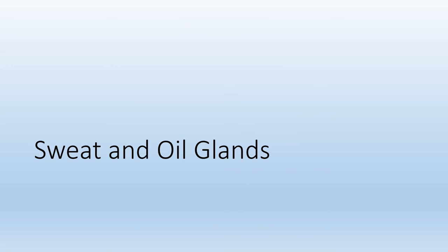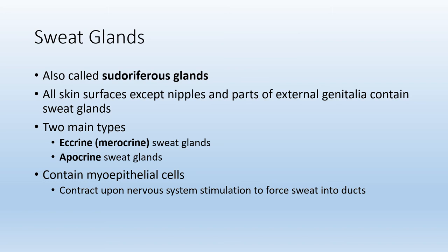The last structures we will talk about are sweat and oil glands. Another name for sweat glands is sudoriferous glands. All skin except for the nipples in both male and female and external genitalia will contain sweat glands. There are two different types of sudoriferous glands: eccrine and apocrine. All sweat glands contain a special cell type known as a myoepithelial cell — myo means muscle — comprised of smooth muscle. When they contract, they force the gland to produce its contents and push them out onto the body.